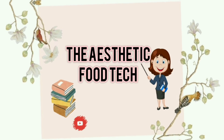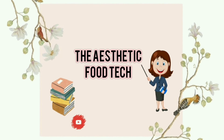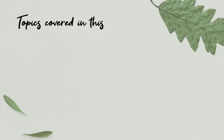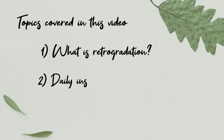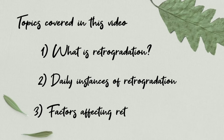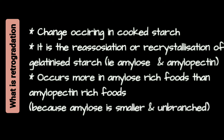Hello everyone, welcome to Aesthetic Food Tech. In this video I am going to discuss about retrogradation. Retrogradation is a change that occurs in cooked starch, that is in gelatinized starch.